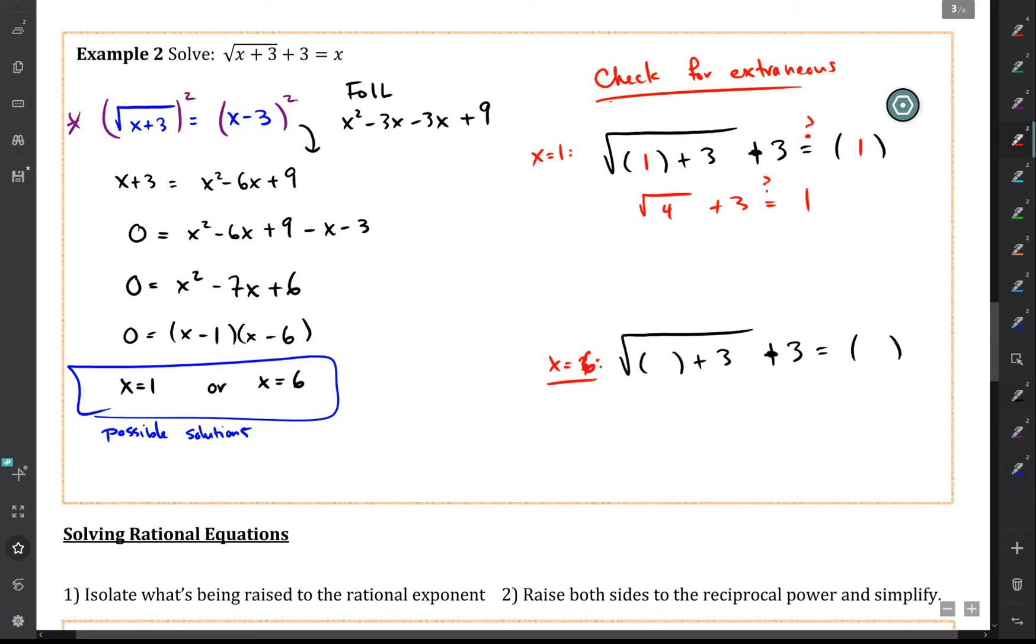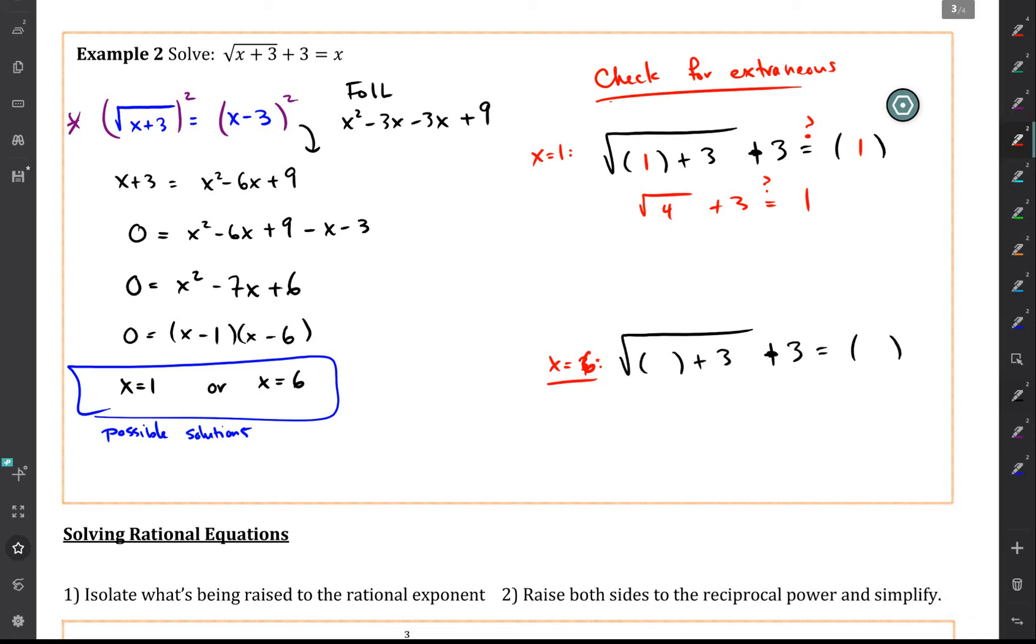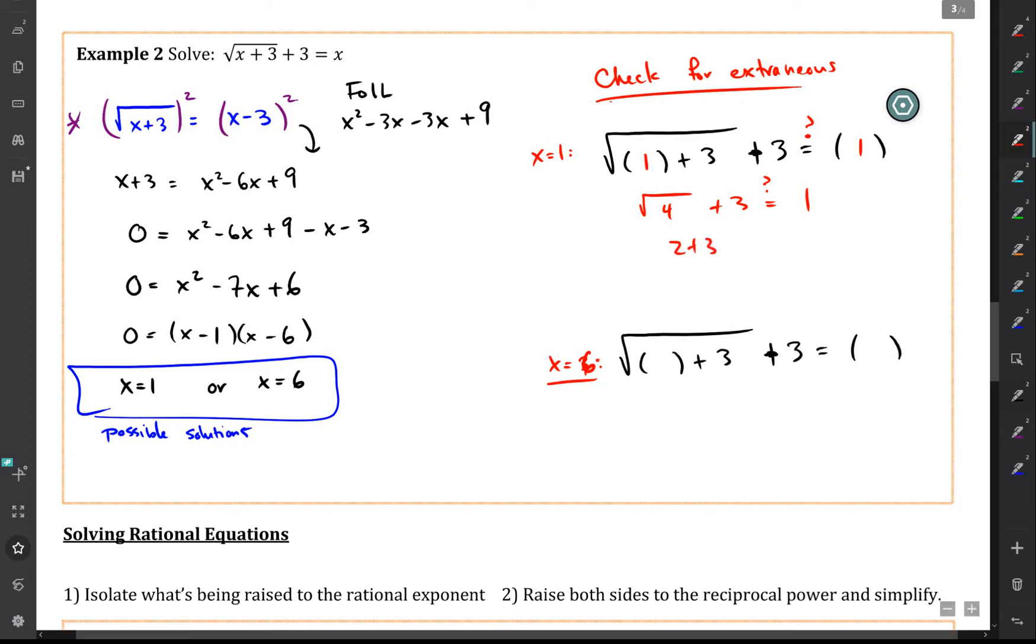And in this case, we'll get 2 plus 3 equals 1. Nope, that doesn't work. And so I think the reason why that's true, or why this shows up as not being true, is because if you were to move the 3 over the other side and square both sides, you would get that as a solution.